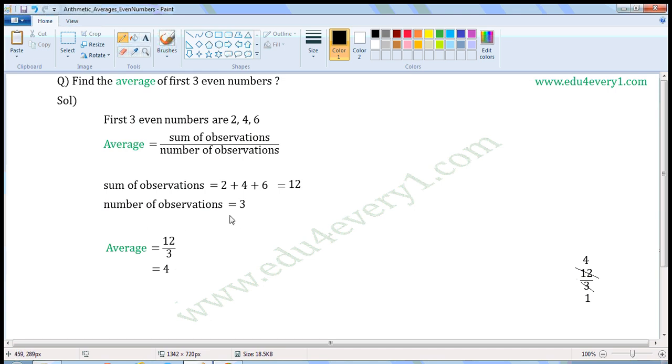Number of observations is equal to, here there are 3 observations. So, number of observations is equal to 3.